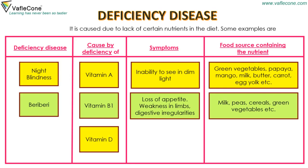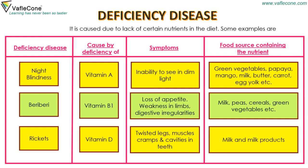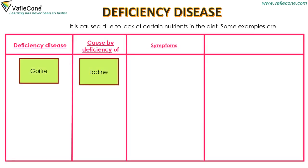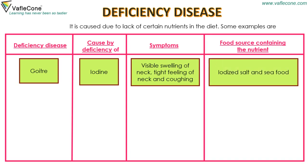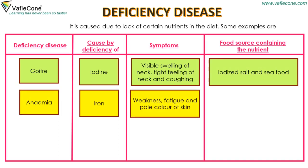Lack of vitamin D causes rickets. Symptoms are twisted legs, muscle cramps, and cavities in teeth. Food sources are milk and milk products. Lack of iodine causes goiter. Symptoms are visible swelling of the neck, tight feeling of the neck, and coughing. Food sources are iodized salt and seafood.